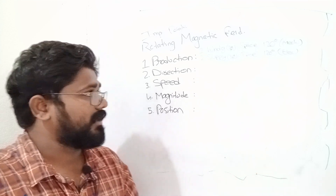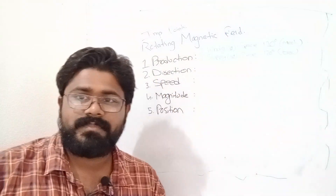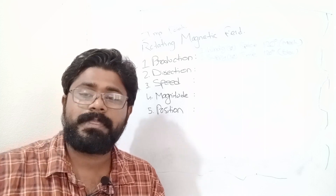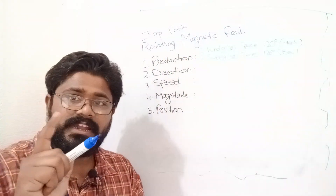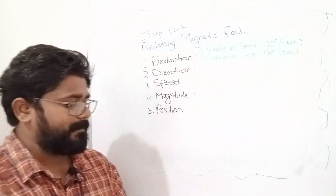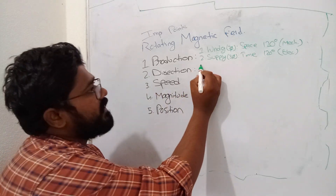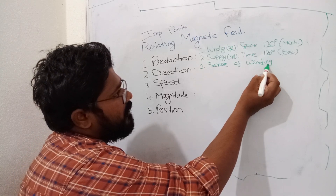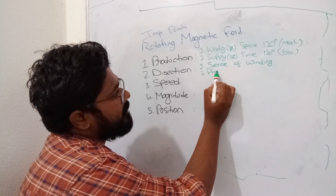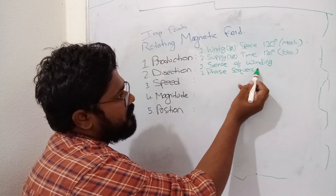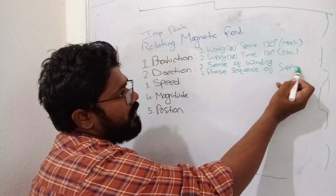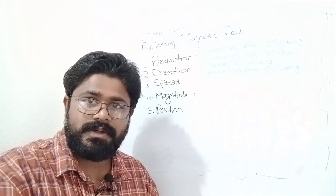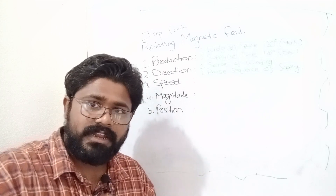The supply given to this winding should be displaced in time by 120 degrees electrical. Electrical 120 degrees and mechanical 120 degrees are not the same in most cases. Now the second condition is direction. The direction of rotation of this rotating magnetic field depends on two factors: one is the sense of winding, and the other is the phase sequence of the supply.